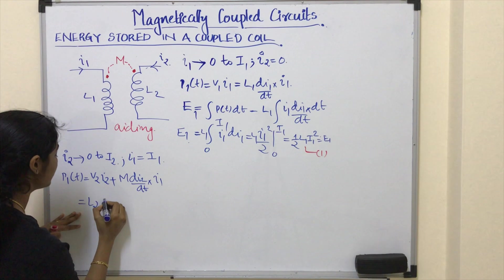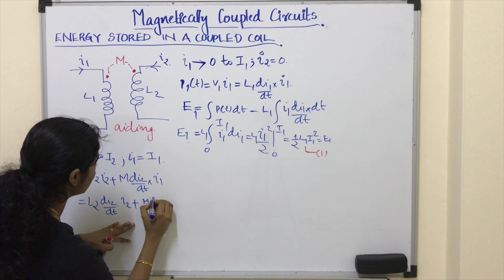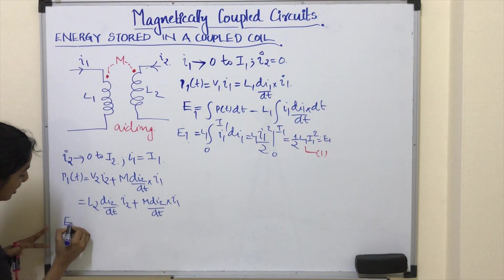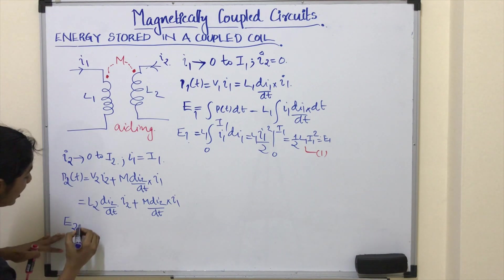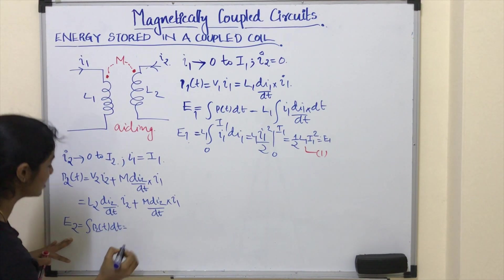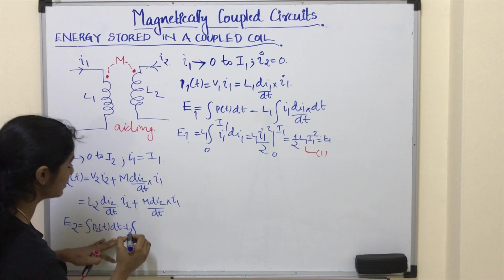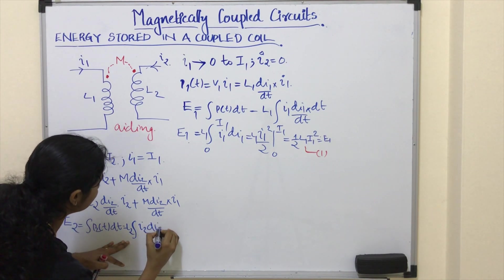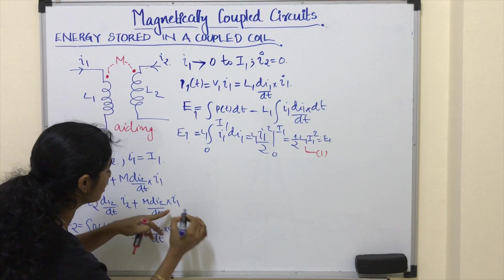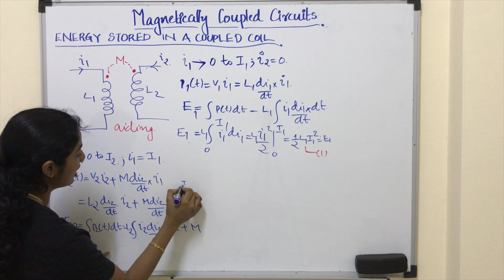V2 is L2·(dI2/dt), so the power expression becomes L2·(dI2/dt)·I2 plus M·(dI2/dt)·I1. Energy E2 is given by the integral of P2(t)dt. Taking L2 outside as a constant, and M and I1 outside as they are also constants in this step.